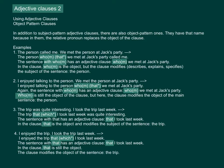Example 3: 'The trip was quite interesting. I took the trip last week.' Combined: 'The trip that or which I took last week was quite interesting.' The sentence with 'that' has an adjective clause: 'that I took last week.' In the clause, 'that' is the object, and it modifies the subject of the sentence — 'the trip.'